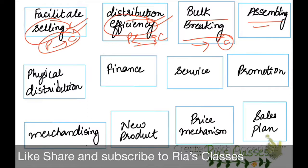Next is Assembling. The distribution channel helps assemble products to meet the buyer's needs. Following this is Physical Distribution, which involves the actual movement of goods — this is marketing logistics — ensuring products reach from the producer to the consumer.